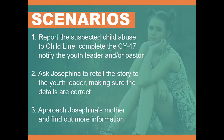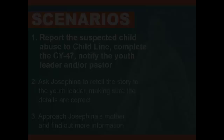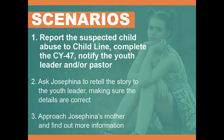The youth volunteer must also notify the youth leader and/or the pastor. Option 2: Affirm Josefina for sharing this information, then ask her to go with you to the youth leader to share the same information so you both can help her. Option 3: The youth leader should approach Josefina's mother and find out more information. Option 1 is correct. By making a report of suspected child abuse to Childline, completing the CY47 report, and notifying the youth leader or pastor, the youth leader volunteer fulfills both her legal and Safe Sanctuaries requirements to make the report and engages the authorities to respond as needed.